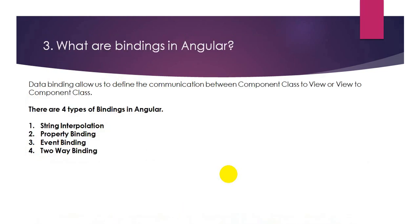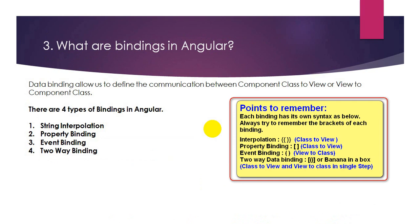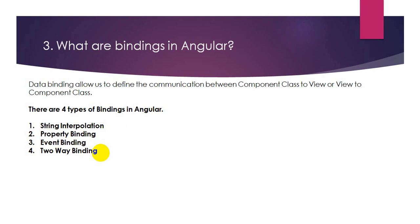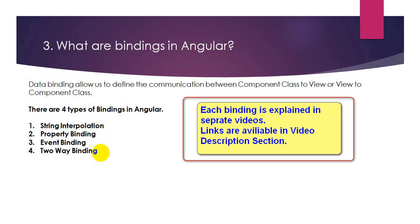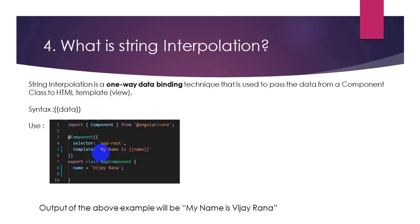The next question is: what are the bindings in Angular? Bindings are used to communicate between the component class and the view. There are four types of bindings: the first is string interpolation, the second is property binding, the third is event binding, and the fourth is two-way data binding. String interpolation is component class to view; property binding is also component class to view; event binding is view to component class; and two-way data binding handles both directions in a single step.